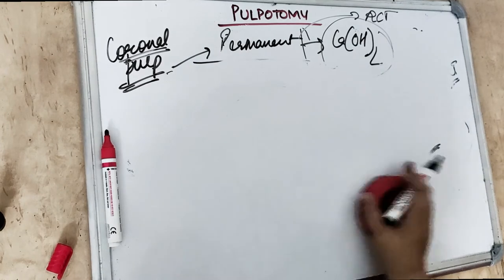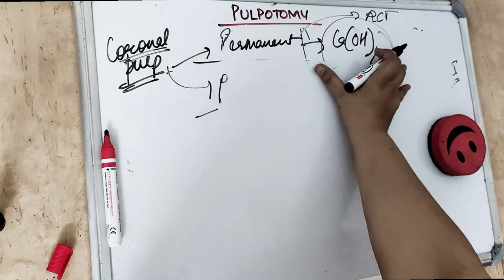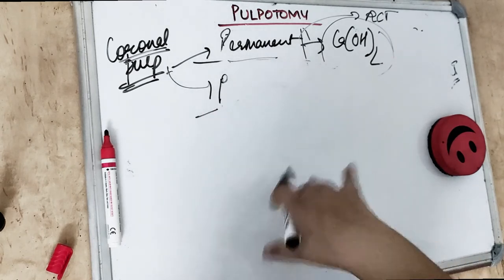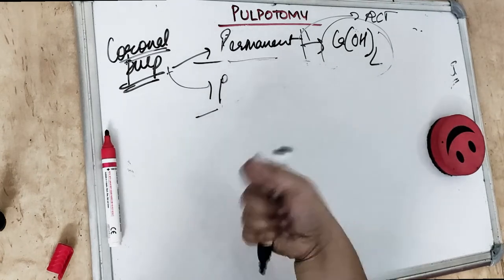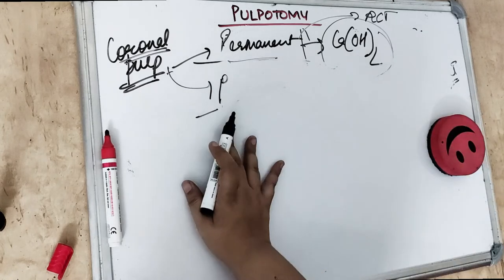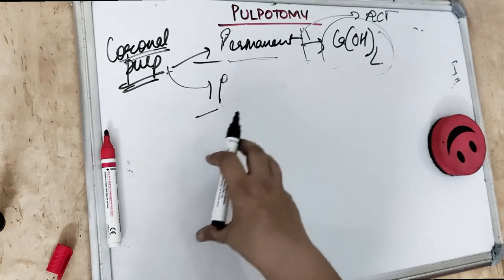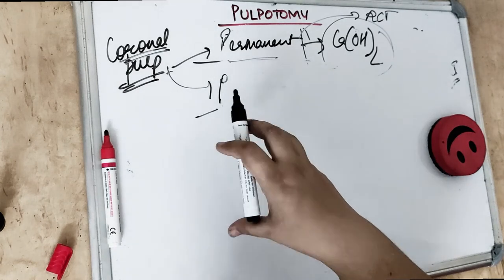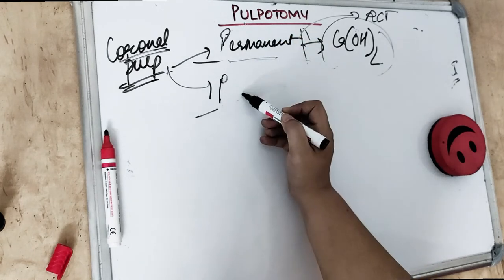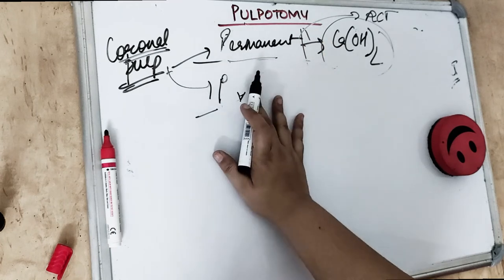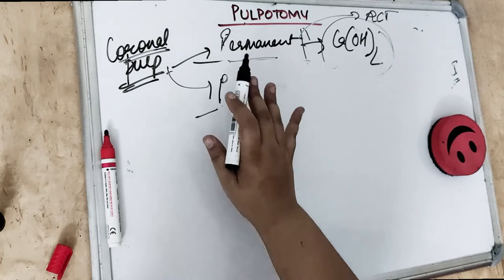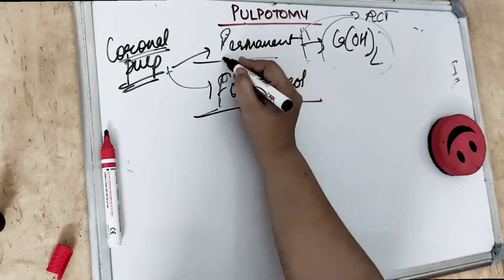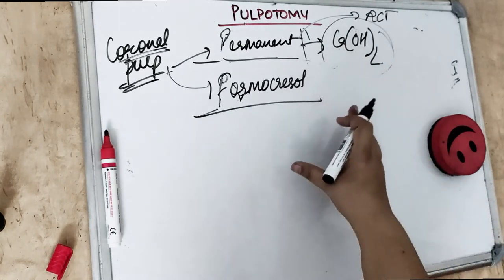For primary teeth, the criteria are the same — the pulp must be vital. It is done in a single appointment using a surgically clean technique. The coronal pulp is removed with a spoon excavator, debris are removed from the chamber, and any hemorrhage is controlled. If hyperemia is present we go for partial pulpectomy. When hemorrhage is controlled and pulp tissue is normal, we proceed with pulpotomy. Then we use formocresol, which is also called the mummifying paste.